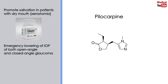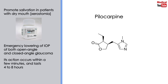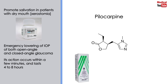Pilocarpine is used to treat glaucoma and is the drug of choice for emergency lowering of intraocular pressure in both open-angle and closed-angle glaucoma. Its action occurs within a few minutes and lasts 4 to 8 hours, and can be repeated. It is available with the brand name Isopto Carpine.